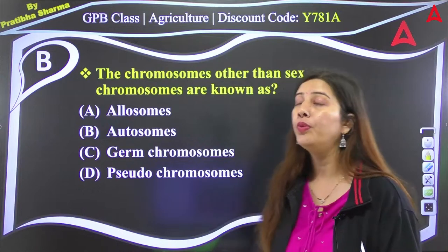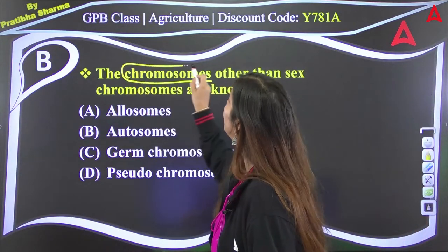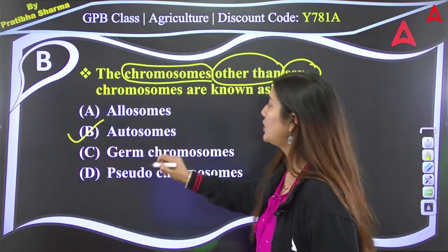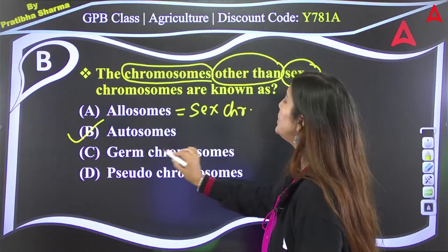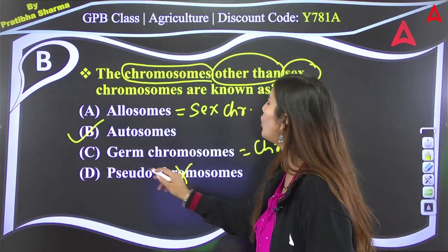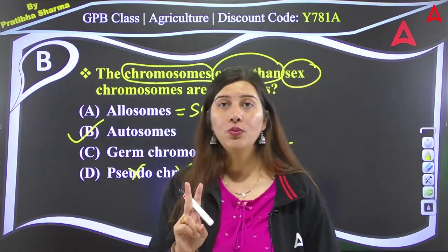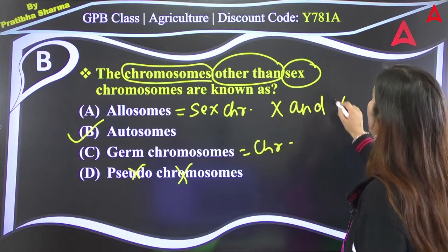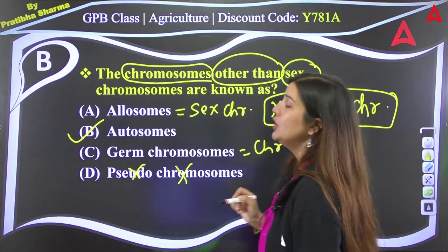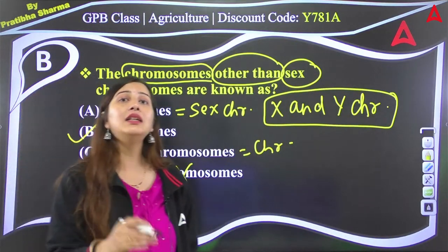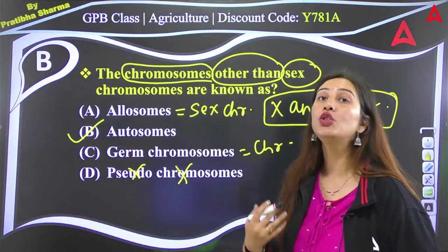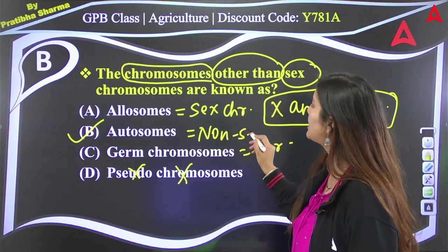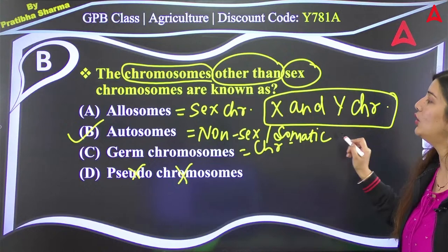Shweta and Mahima got it wrong. The question asks for chromosomes other than sex chromosomes. Allosomes are sex chromosomes (X and Y), also called germ chromosomes. Pseudo chromosome is not a real term. So there are two types: autosomes and allosomes. X and Y are allosomes (sex chromosomes); all remaining chromosomes are autosomes, also called somatic chromosomes.